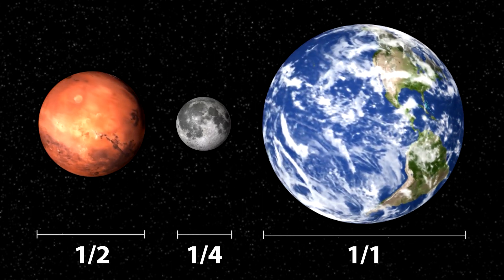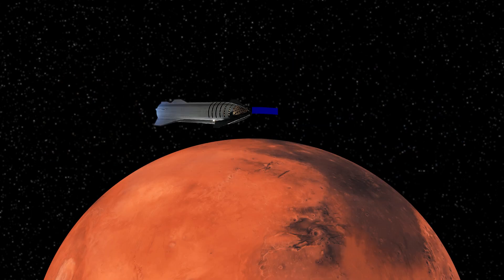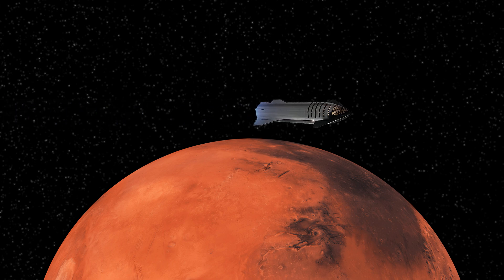On Mars, the smaller size of the planet means the curve of the atmosphere is much tighter. If Starship can't follow the curve when aerobraking, then it'll gain altitude, where it won't be able to generate sufficient lift or drag. This will result in it flying past the planet without stopping.